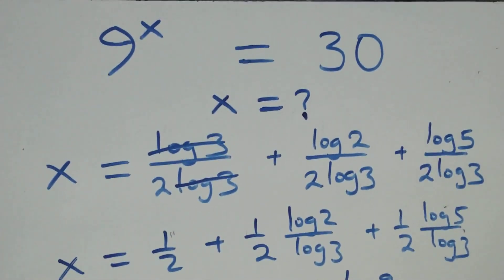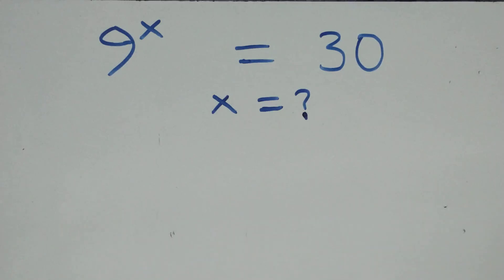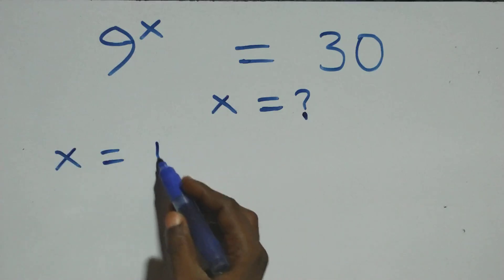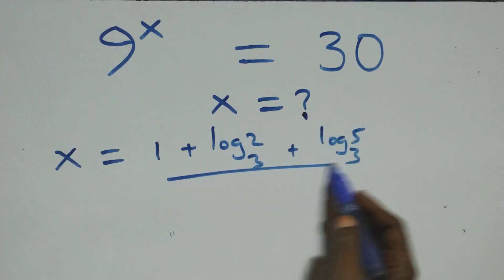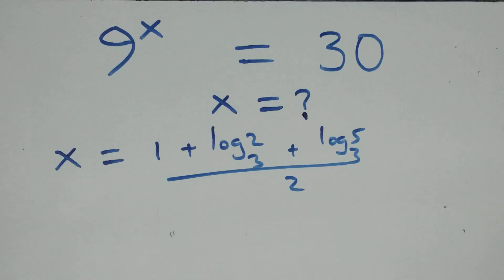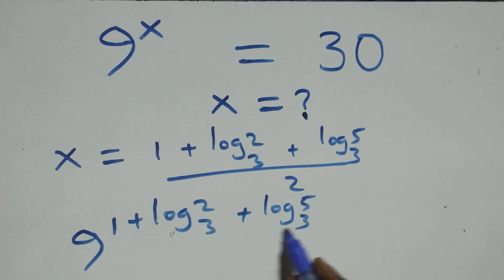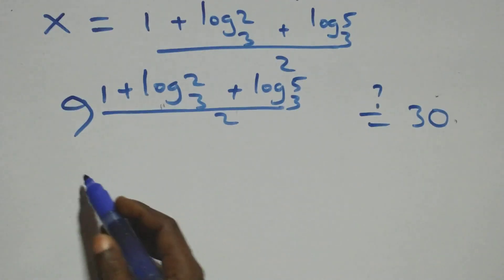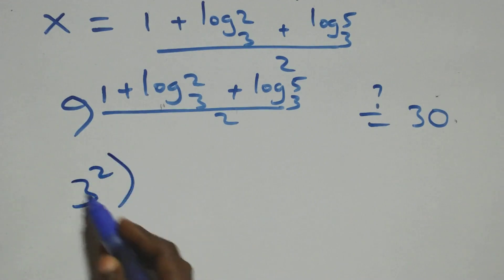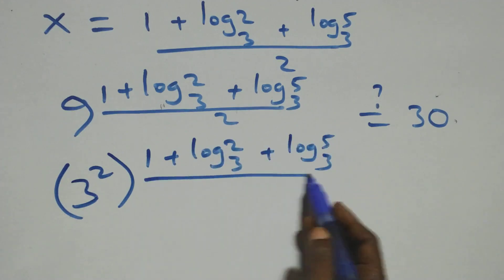Let's check whether this value satisfies the original equation. We substitute x equals (1 plus log 2 base 3 plus log 5 base 3) over 2 back into 9 raised to power x and verify it equals 30.